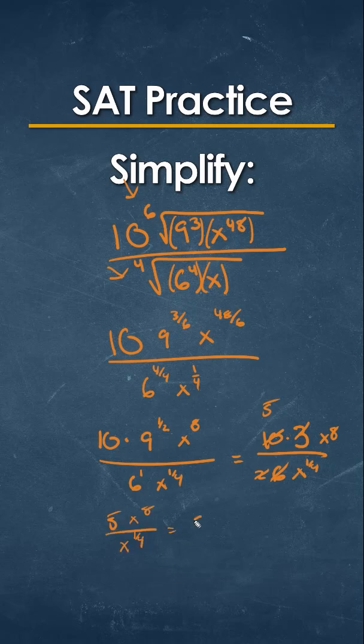Well that's going to be equal to 5 times x raised to the 8 times x raised to the negative 1 over 4. Since we have those two, that's going to be x raised to the 8 minus x raised to the 1 over 4. So our final answer is going to be 5 times x raised to the 31 over 4.